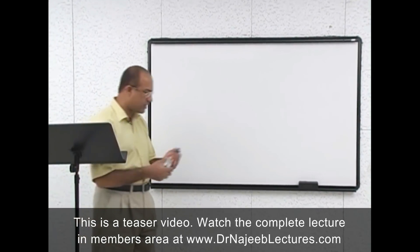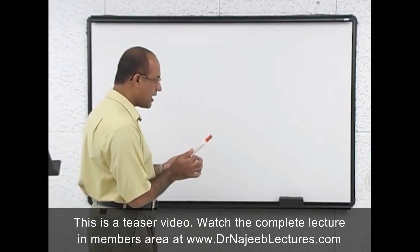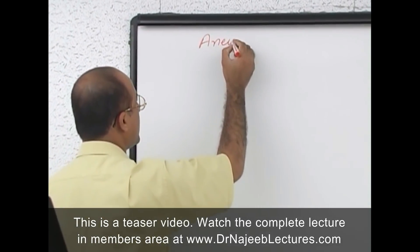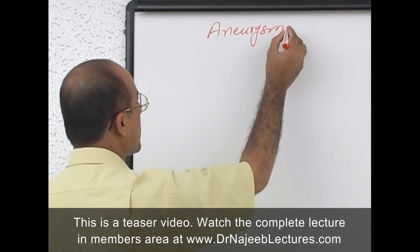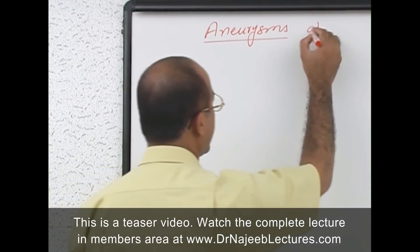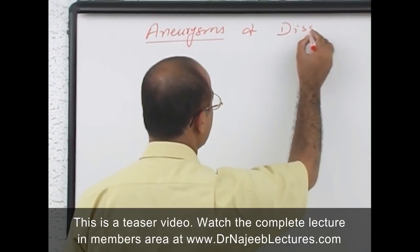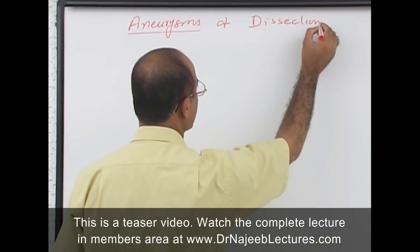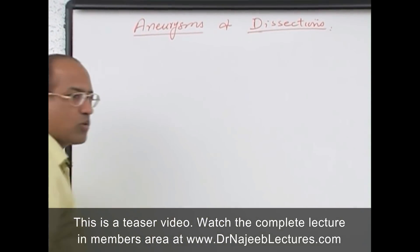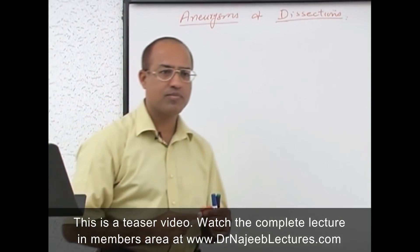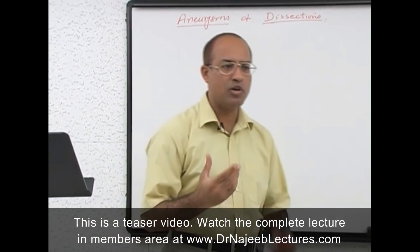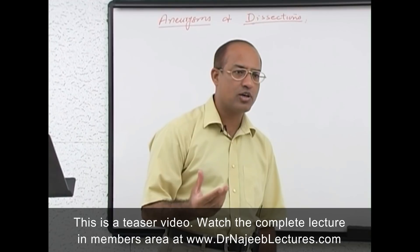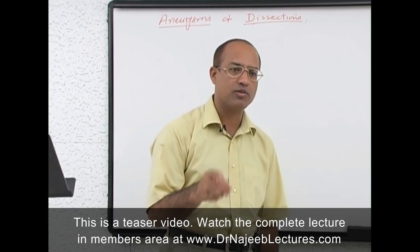We will be discussing aneurysms and dissections. First of all, we will define what is an aneurysm. An aneurysm is an abnormal, localized, irreversible dilatation of any part of the cardiovascular system.